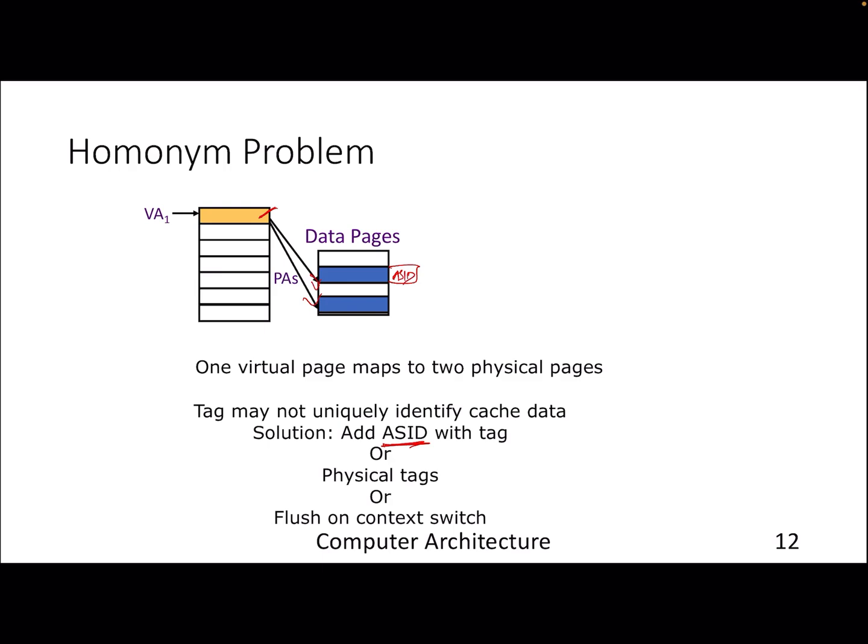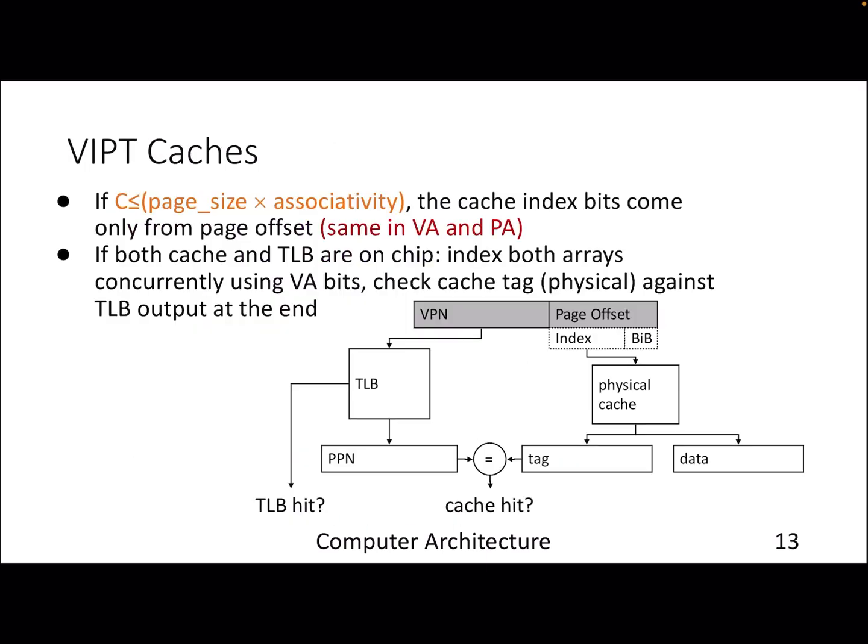These solutions can be costly. Alternatively, you can use physical tags — even if you use virtual indexing, if you translate the tag portion of the address to get the physical tag and store that in your tag array, the problem is solved. These are the two crucial problems in virtual memory when we talk about cache hierarchy: the synonym problem and the homonym problem.